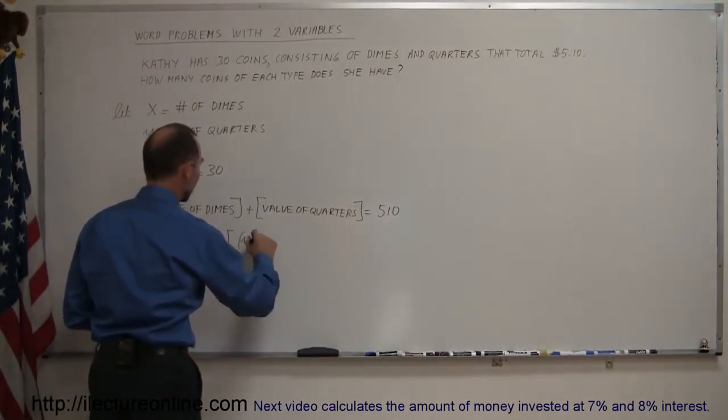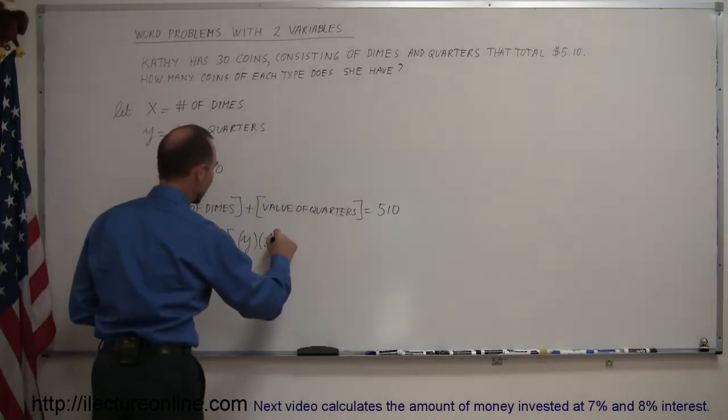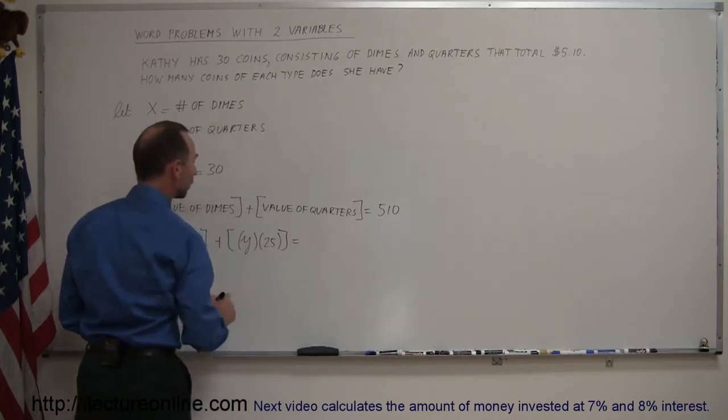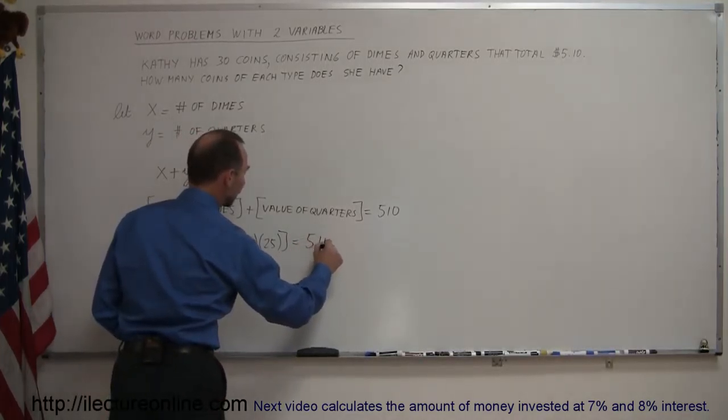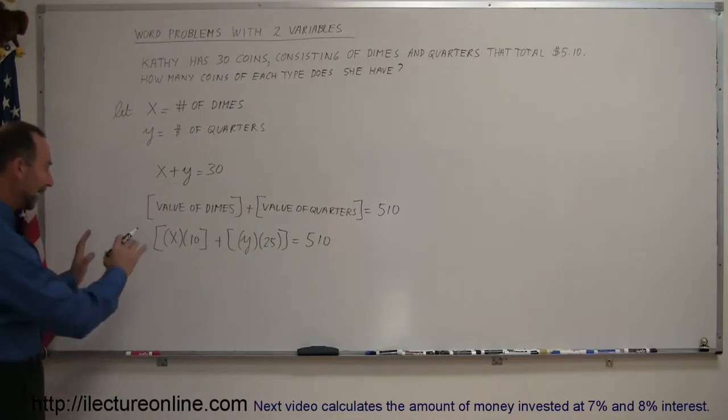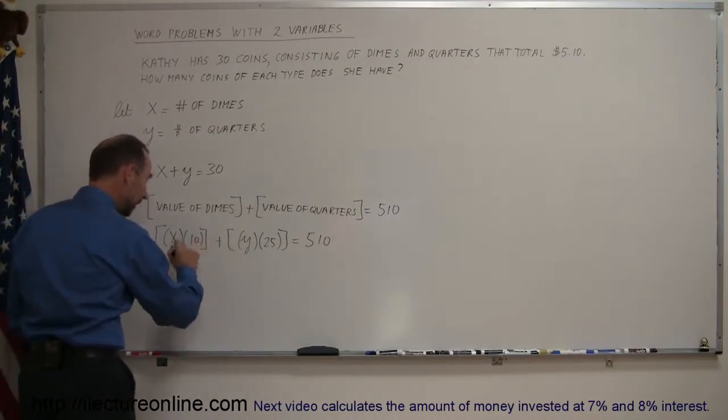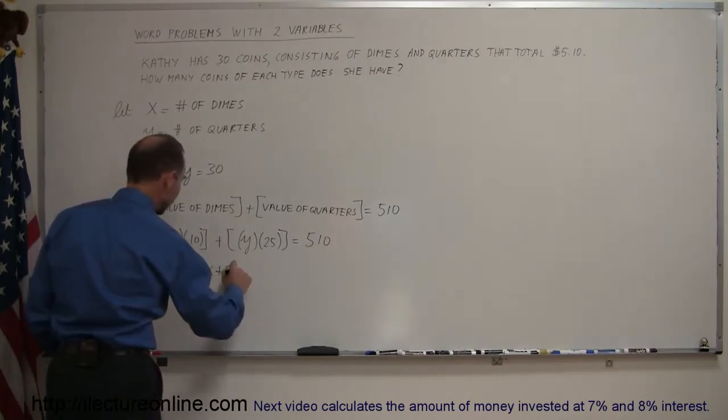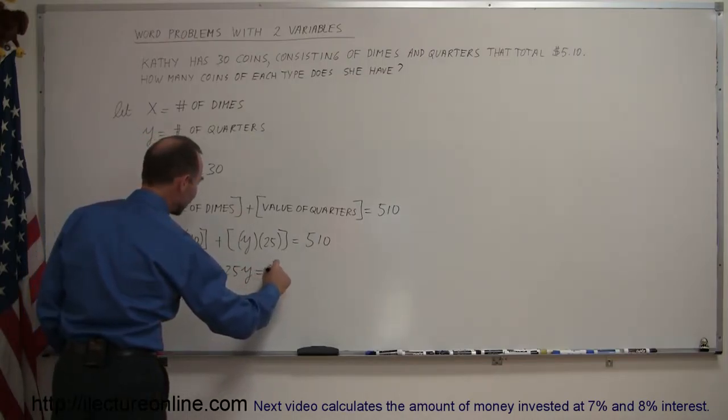Since you have y number of quarters, and each quarter is worth 25 cents, we can then say that y, the number of quarters you have, times 25 cents each, adds up to the value of all the quarters. When we add it all together, that's worth 510 cents. Simplifying that, get rid of all the parentheses and brackets, we can say that 10x plus 25y equals 510.